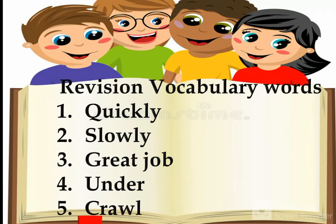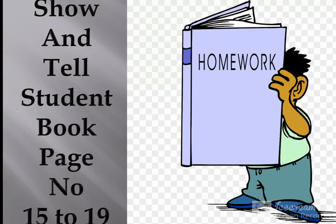After this, the teacher will repeat all the action words with actions three to four times. Let's revise the vocabulary words learned today: first is 'quickly', second is 'slowly', third is 'great job', fourth is 'under', and fifth is 'crawl'. Teacher and students will repeat these five words with actions at least four to five times.